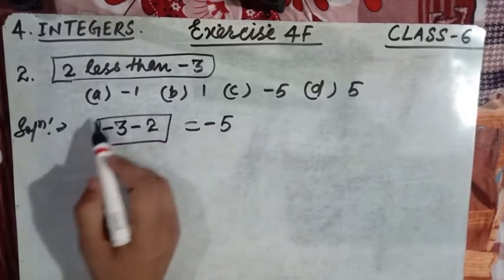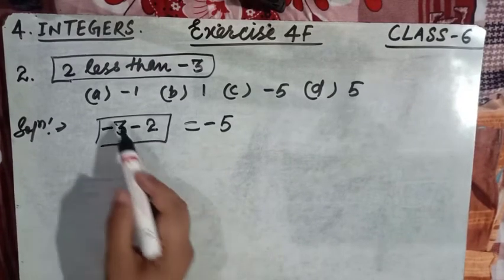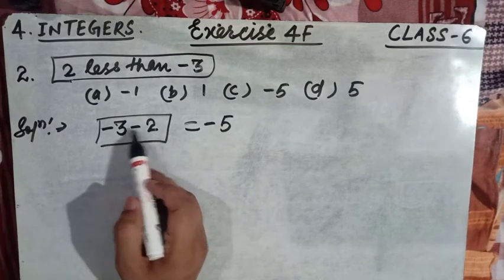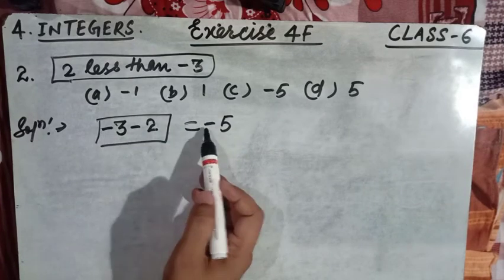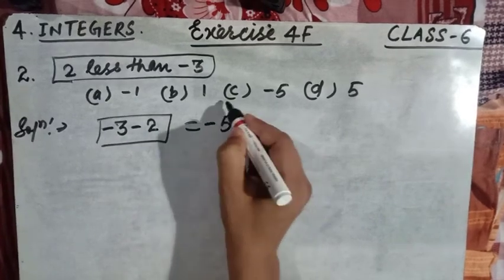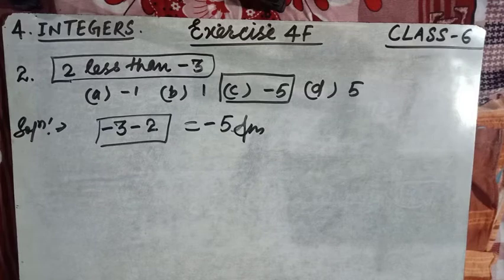So we have minus three minus two. Because both numbers are negative, we add their absolute values regardless of sign: three plus two equals five, and we place the minus sign. So the answer is minus five. Option C is your answer. Similarly, we can solve because Exercise 4 contains all previously studied types of questions.